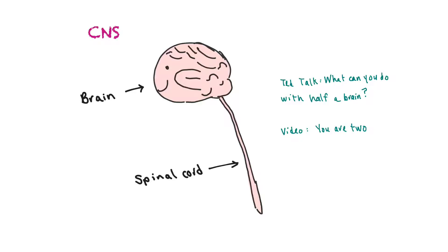Concussions and brain injuries are very problematic. There is an interesting TED talk entitled 'What Can You Do With Half a Brain?' about a neurosurgeon who, because of severe epilepsy and seizures, has had to remove an entire hemisphere of a child's brain. It goes into the amazing plasticity of our brain to adapt — these patients are actually able to recover a lot of function using the remaining hemisphere. Another video entitled 'You Are Two' talks about our left brain versus right brain and how one hemisphere may have more of a voice than the other.